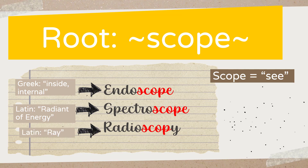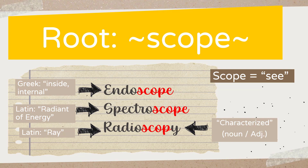The next one is 'radioscopy.' We know what 'radio' means — it's kind of like rays that transmit information. 'Radioscope' — without the 'y' — is basically something that allows you to see through rays, which most of the time refers to x-rays. When we add the 'y,' it indicates a characterized subject area — something that allows you to see with rays. So 'radioscopy' is basically a subject area in a hospital that studies how x-rays can be used to see through your body and help identify what is going on inside.